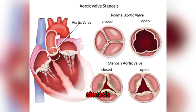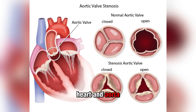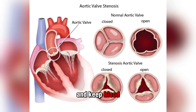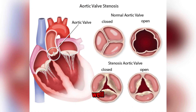1. Aortic Stenosis: The aorta is the main artery that carries blood away from your heart to the rest of the body. The aortic valve sits between the heart and aorta, opening and closing with each heart cycle to let blood out and keep it from leaking back. When the aortic valve becomes narrowed and doesn't open well, it's called aortic stenosis.